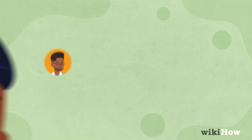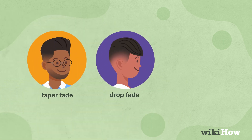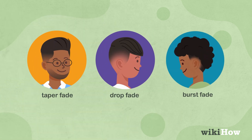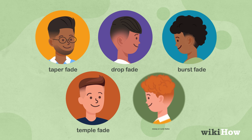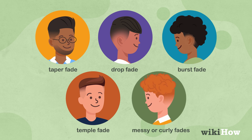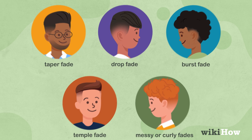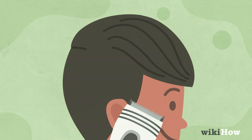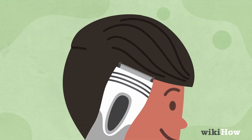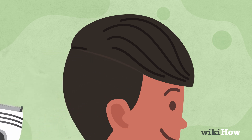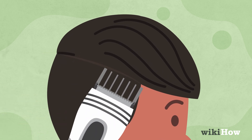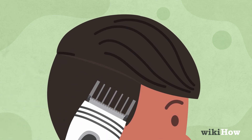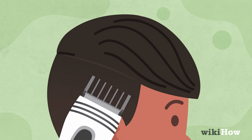Variations include the bald taper fade, drop fade, burst fade, temple fade, and messy or curly fades. To achieve a bald fade, use trimmers to create a bald line from temple to temple, then gradually trim the hair in steps using different clipper guards.